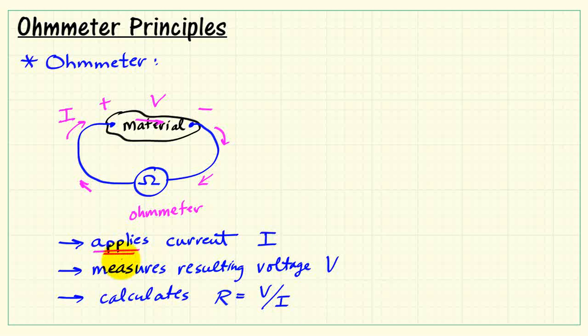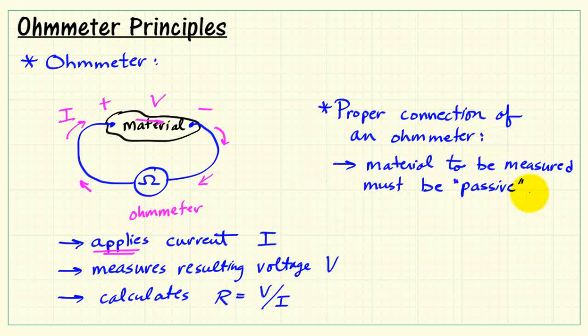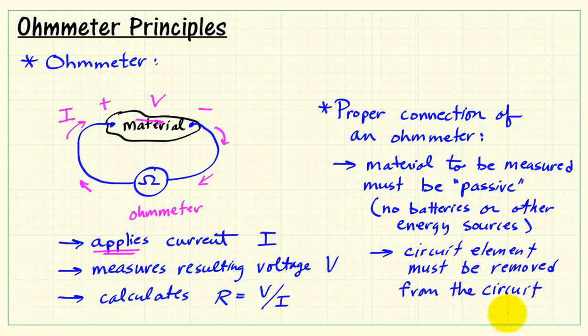Now it's very important to understand that the ohmmeter is an instrument that essentially applies energy to the material. That means that the material to be measured must be passive. You can't have any batteries or other energy sources involved here. The circuit element, if you're trying to measure the resistance of a resistor, for example, must be removed from the circuit before you make this measurement, because you want the ohmmeter to have the ability to control the current through that device.